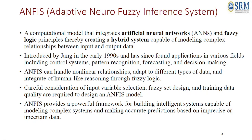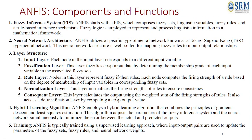We will go in depth of the Adaptive Neuro Fuzzy Inference System. Here are the basic components of the ANFIS system. It begins with the fuzzy inference system, where fuzzy sets along with linguistic variables and fuzzy rules are part of the inference system. Along with that, we have a neural network architecture. The ANFIS system specifically utilizes a neural network known as the Takagi-Sugeno-Kang type neural network.